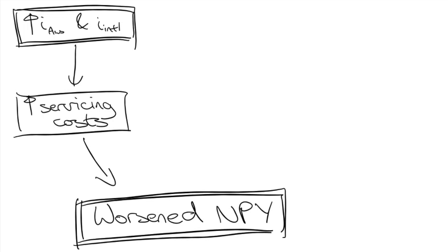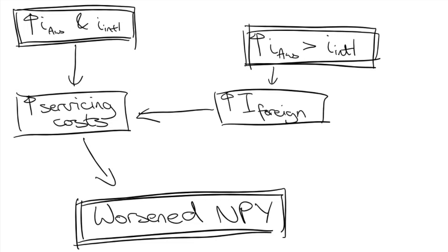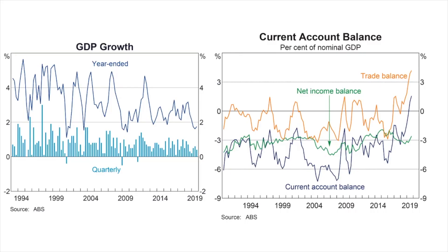Furthermore, if Australia's interest rates rise while others stay constant, this creates an interest rate differential. We attract even more foreign investment and subsequent increases in NPY outflows, further worsening the deficit. That's why you would see a strong correlation between economic growth, higher interest rates and the worsened NPY deficit.